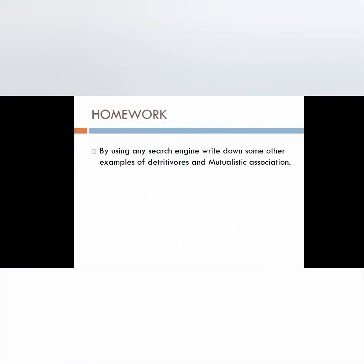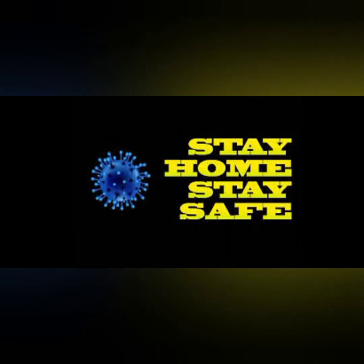Now we have a homework assignment. By using any search engine, write down some other examples of mutualistic association. We have looked at the remora fish and shark example. Write your answers on any copy or sheet of paper. I'll be able to finish the lesson.